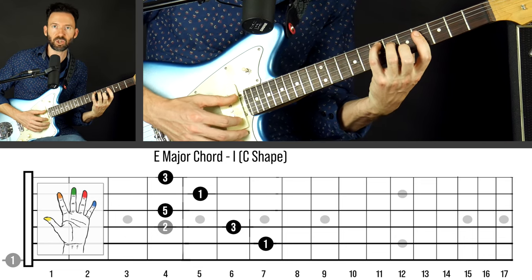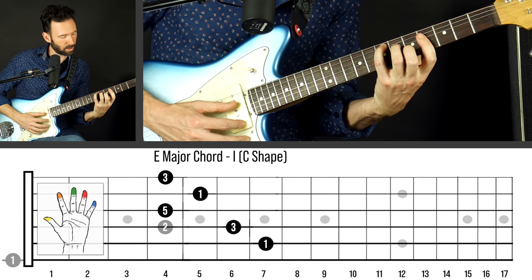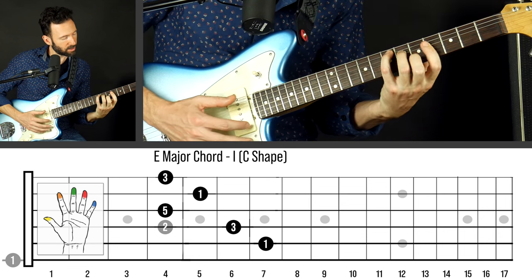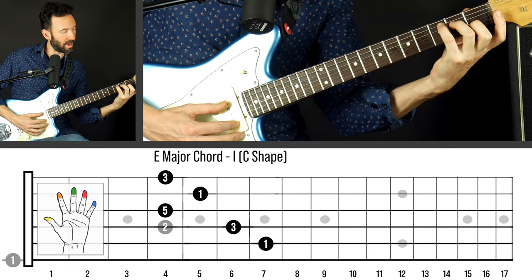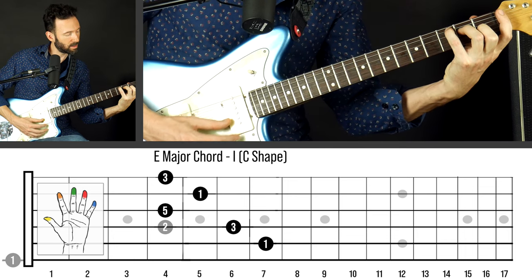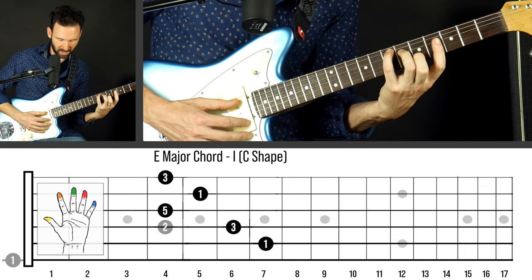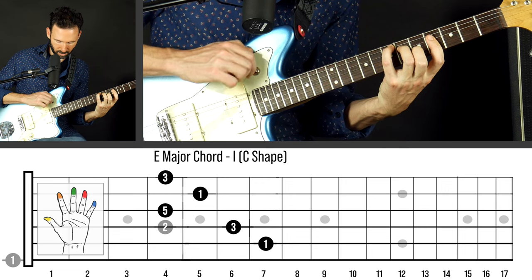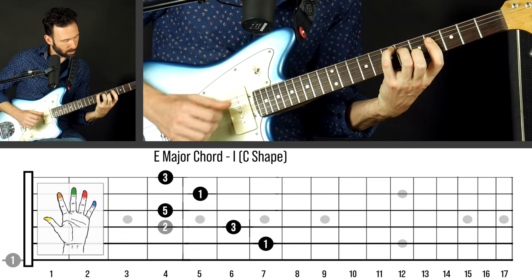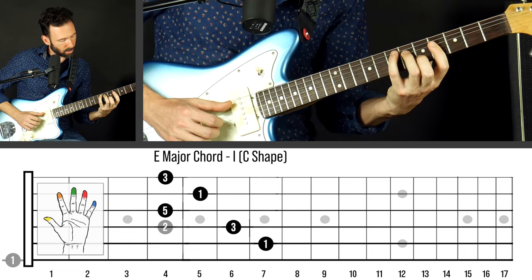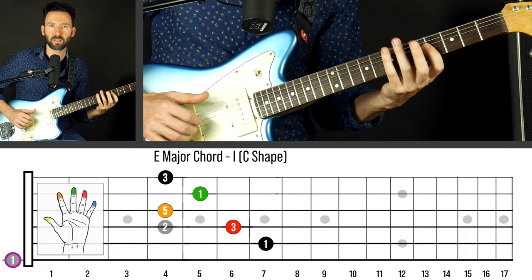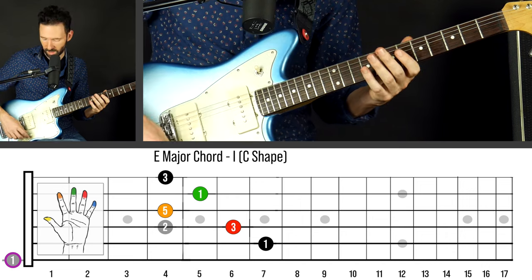The E comes out of the C shape in CAGED. This is what a C looks like, and now I'm using my index finger as if it's the nut. If we slide that up to an E - we've got the open E, making use of the open E string.